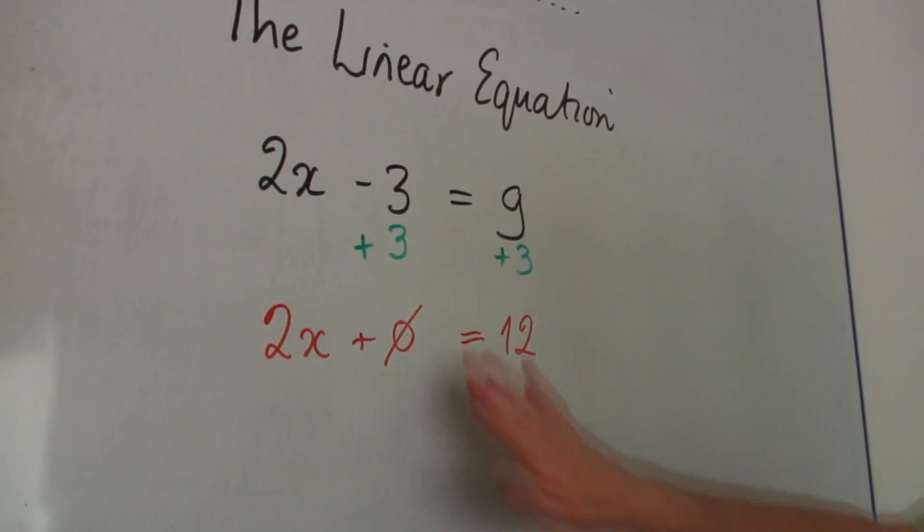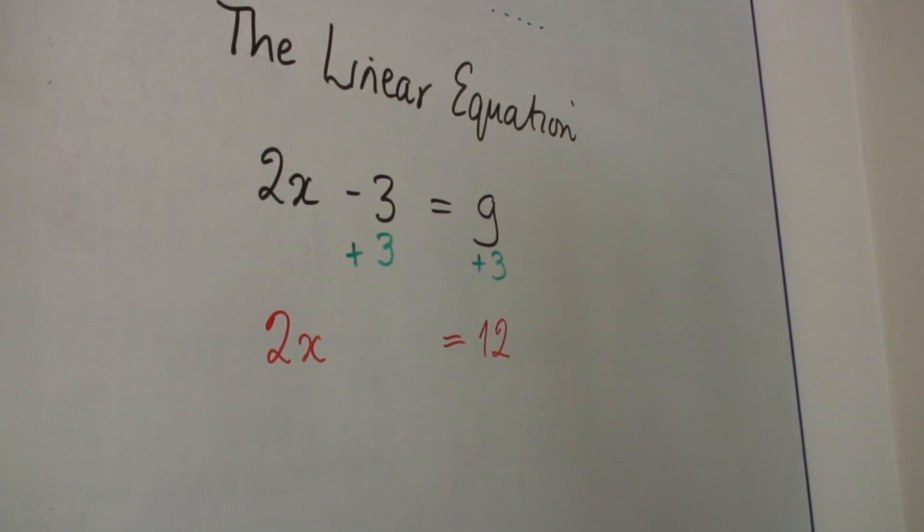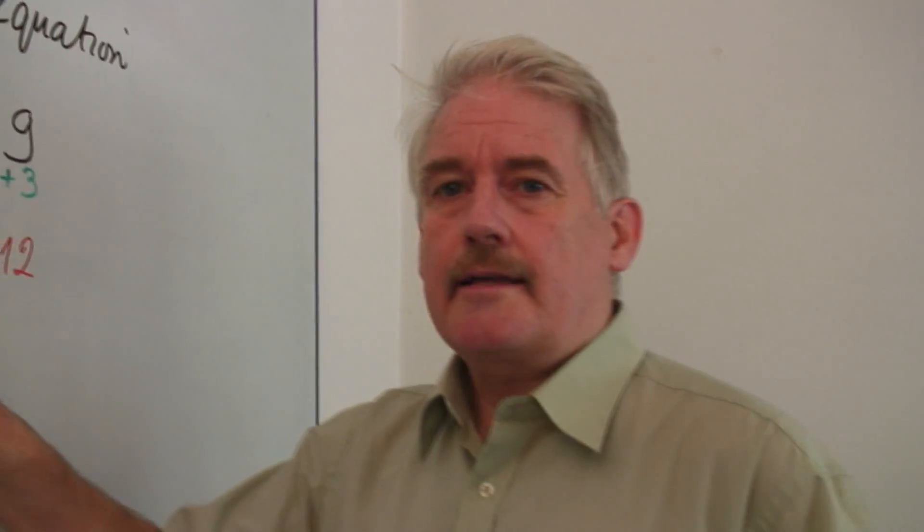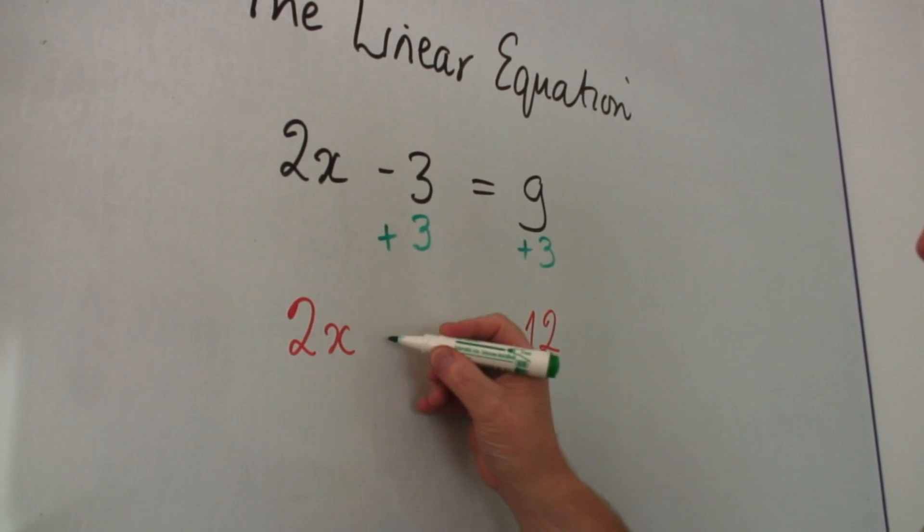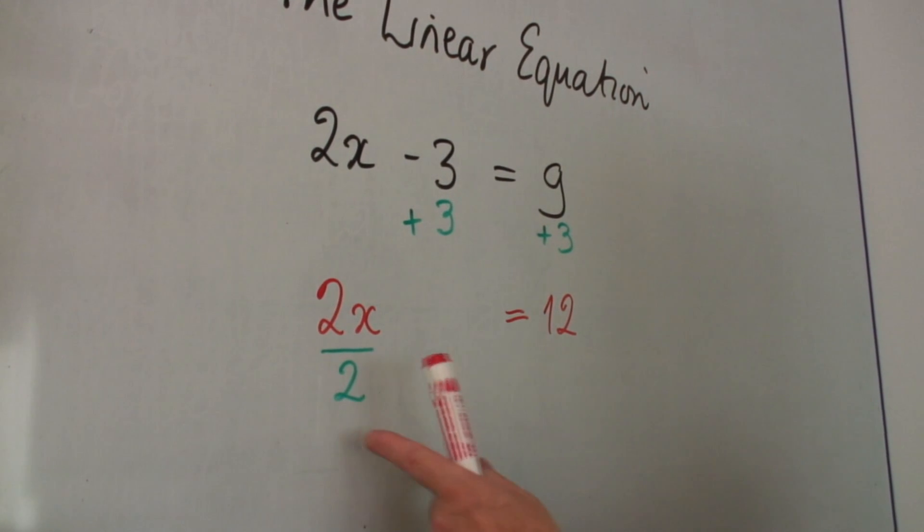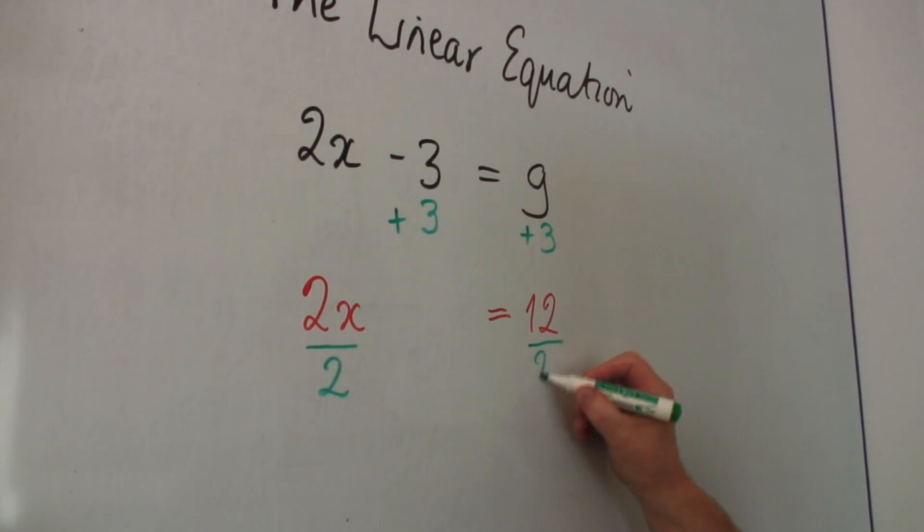I can get rid of that. I don't need that now. It just confuses things. Now I've got to do the same to both sides. I've got 2x's here. Well what happens if I divide by 2? Like that. If I do it this side, I must do it this side. Divide by 2.